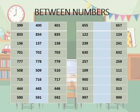Coming to the exercise of between numbers: between 399 and 401, which number comes? 400. Between 833 and 835, which number comes? 834. Between 136 and 138, 137 comes. Now you will be able to do all the problems of the between numbers.